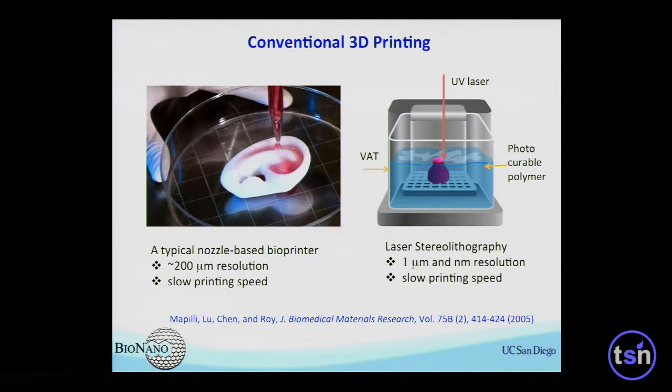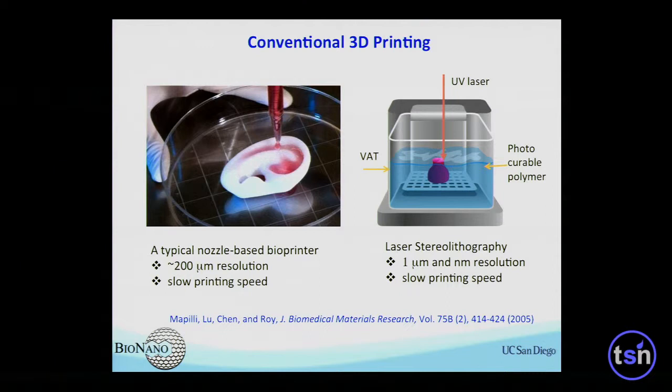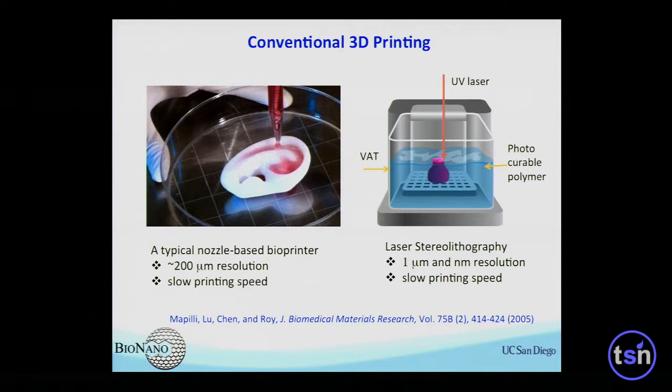I took a totally different approach. Instead of using a nozzle, with my background in laser optics, I used a laser or photon beam to polymerize the monomer solution — those biomaterials. Through photopolymerization, we can turn the liquid into solid. In semiconductor fabrication, we can control light all the way down from micron to nanometer scale, so that allows us to have a printing resolution from micron all the way to nanometer scale.